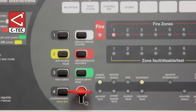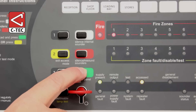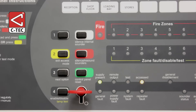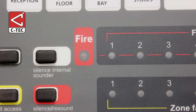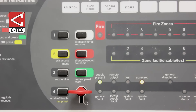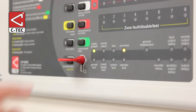After the cause of the alarm has been investigated and you are confident that everything is back to normal, you can reset the panel by pressing the Reset button. The panel will give a double beep to confirm that the reset process has started, and after a few seconds its red general fire and relevant zonal indicators will go out. You can now exit Access Level 2 by turning the key to the O position and removing it.